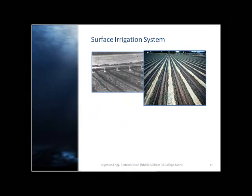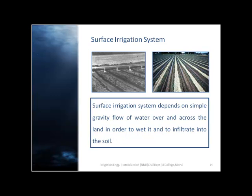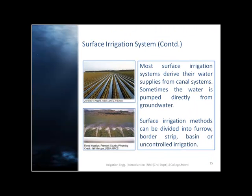Surface irrigation system: it depends on simple gravity flow of water over and across the land in order to wet it and to infiltrate into the soil. Most surface irrigation systems derive their water supplies from canal systems; sometimes the water is pumped directly from groundwater. Surface irrigation methods can be divided into furrow, border strip, basin, or uncontrolled irrigation.